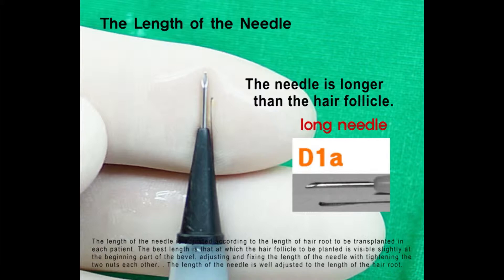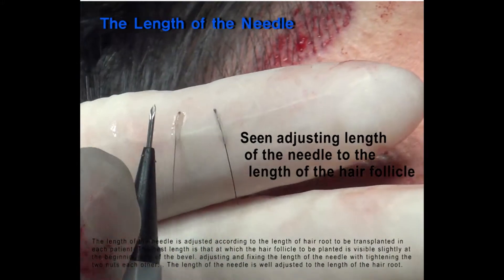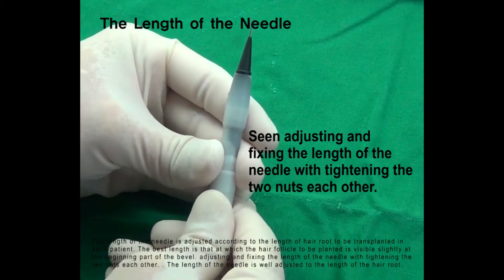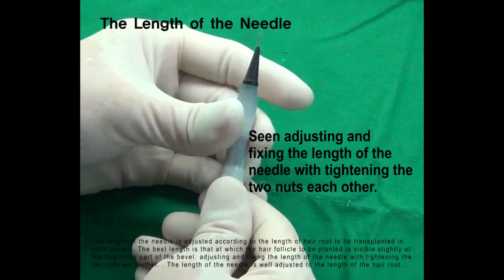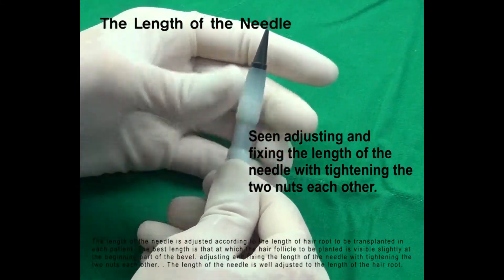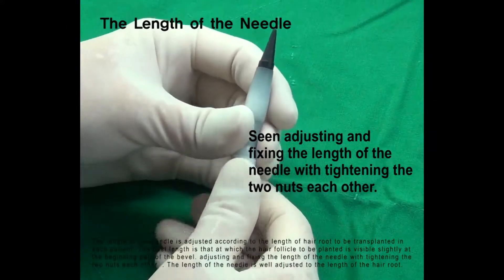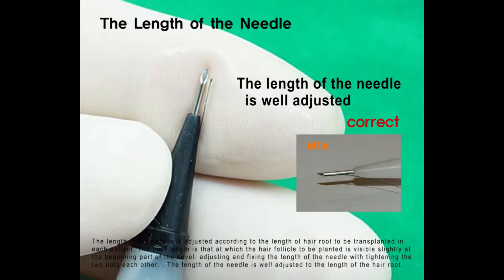The length of the needle is adjusted according to the length of the hair root to be transplanted in each patient. The optimal length is that at which the hair follicle to be planted is visibly slightly at the beginning part of the bevel. The length of the needle is then adjusted, fixed, and the two nuts tightened against each other. The length of the needle should be well adjusted to the length of the hair root.